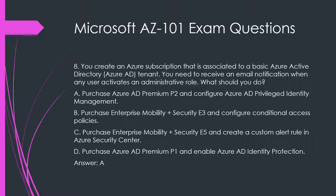A. Purchase Azure AD Premium P2 and configure Azure AD Privileged Identity Management. B. Purchase Enterprise Mobility Plus Security E3 and configure Conditional Access Policies. C. Purchase Enterprise Mobility Plus Security E5 and create a custom alert rule in Azure Security Center. D. Purchase Azure AD Premium P1 and enable Azure AD Identity Protection. Answer: A.